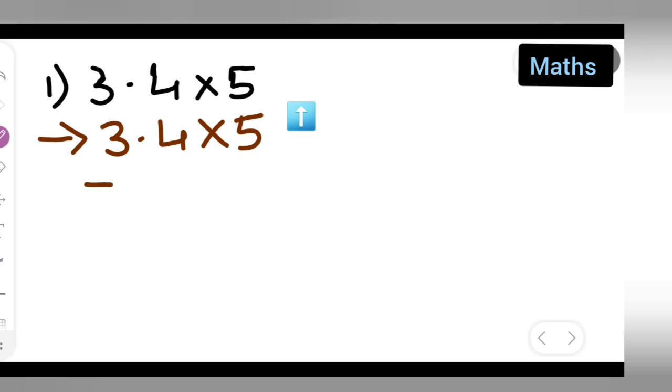Now this is equal to, remove the decimal point. So it will be 34 upon 10 multiplied by 5.